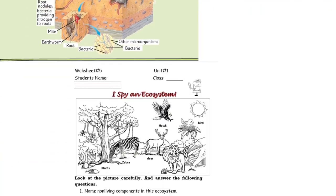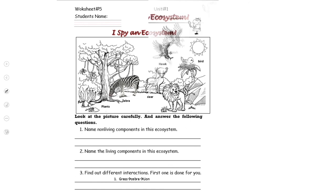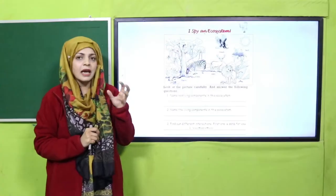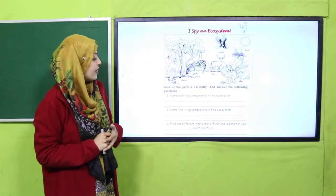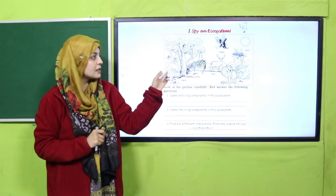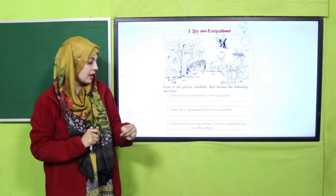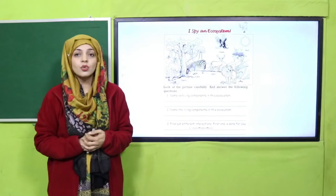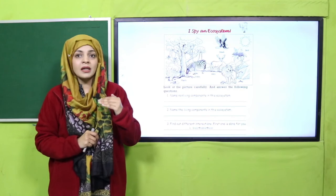Now we will move forward to worksheet number 5. Write your name and class. You can see a forest ecosystem — 'I Spy an Ecosystem.' Name the non-living components like air, sun, soil, rocks. Then name the living components — the animals and plants you can find. Then find different interactions: for example, zebra eats grass and lion eats zebra. Find more such interactions. Pause the video, get the printed worksheet from your teacher, and fill it in.